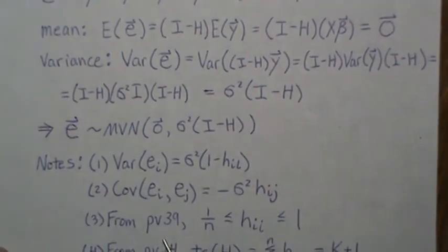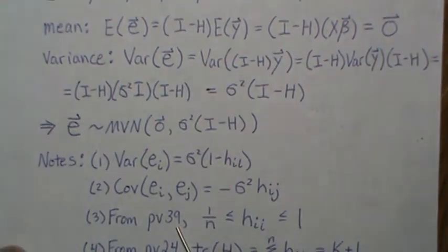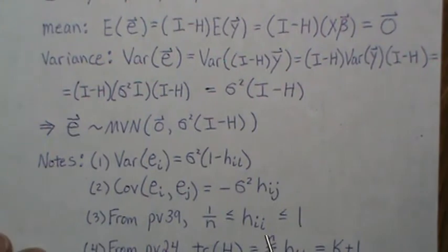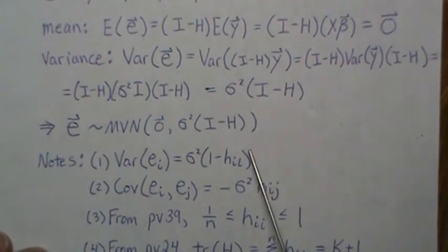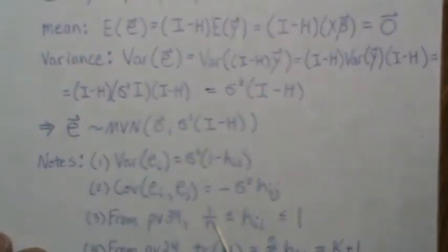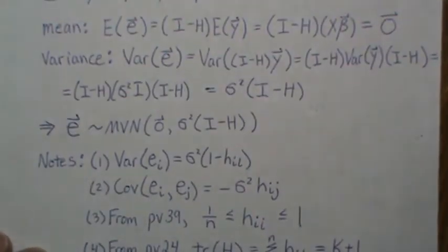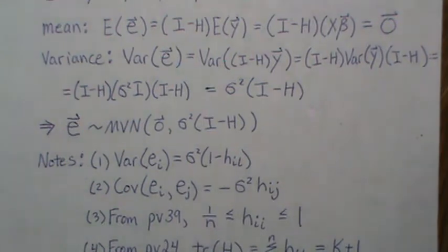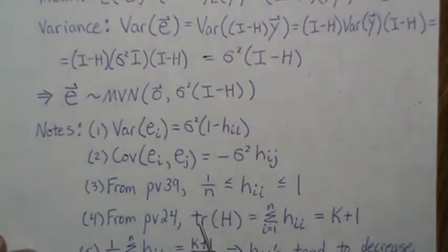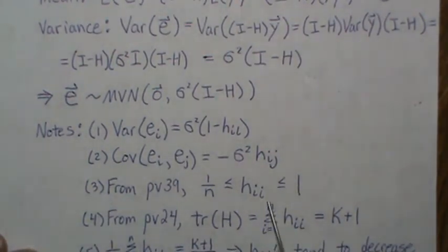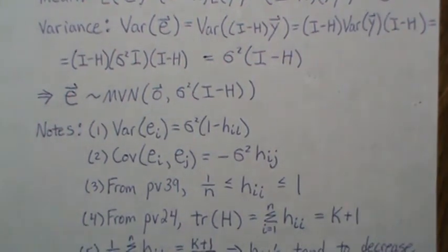Now a few more notes. From previous video 39 in this playlist, Generalized Linear Models Regression, we showed that the diagonal elements of this hat matrix are greater than one over n but less than one. From previous video 24 in this playlist, we showed that the trace of this hat matrix, which means add up the diagonal elements, equals k plus one.